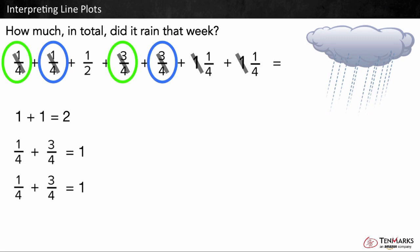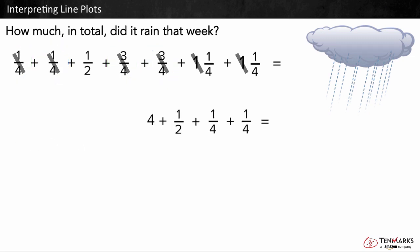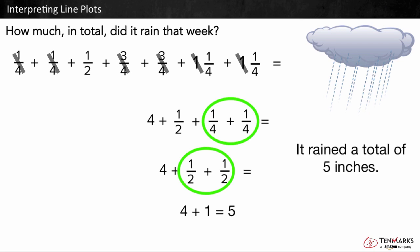So now we have four plus one-half plus one-fourth plus one-fourth. One-fourth plus one-fourth equals two-fourths. Two-fourths is equivalent to one-half, so I can rewrite the equation as four plus one-half plus one-half. Two-halves makes one whole. This equals five inches of rain. So, for the week, it rained a total of five inches.